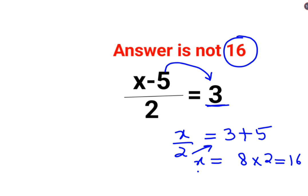Now this would have been right if the question was x upon 2 minus 5 equals to 3. Then what you are doing is absolutely correct. But the problem over here is that we have the whole x-5 divided by 2.